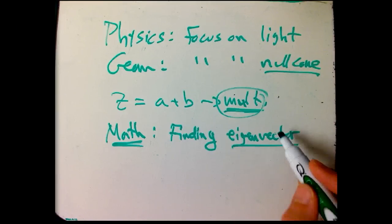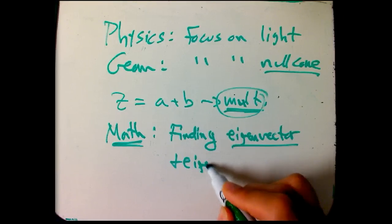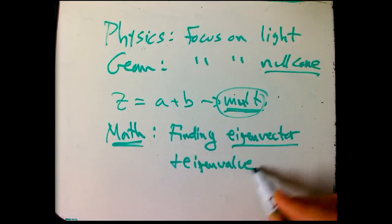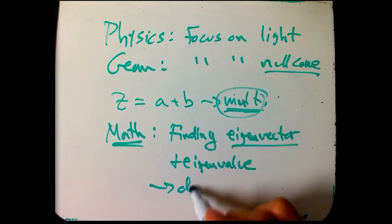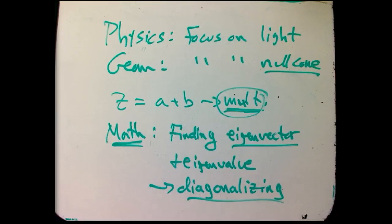because null vectors are special for the geometry, and finding corresponding eigenvalue. And so implicitly, I didn't actually go through the whole thing, implicitly, I came pretty close to diagonalizing the Lorentz transformation, by basically looking at it in terms of the null directions.